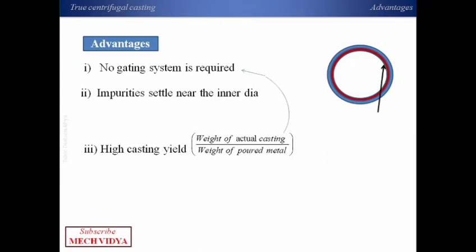And then we get higher casting yield using this process. This is because no gating system is required. Usually in sand casting, after the metal solidifies we have to cut and discard the solidified portion of the gating system from the actual casting. But here no such metal part is discarded as we do not have any gating system at all. So the casting yield is more.